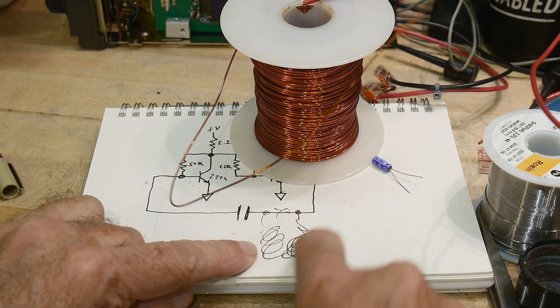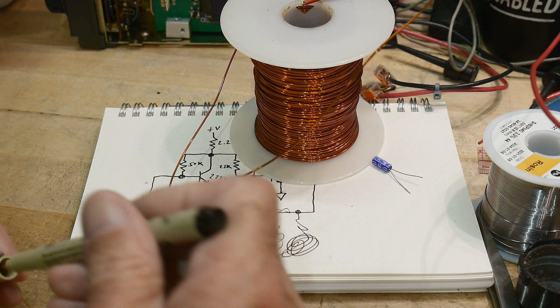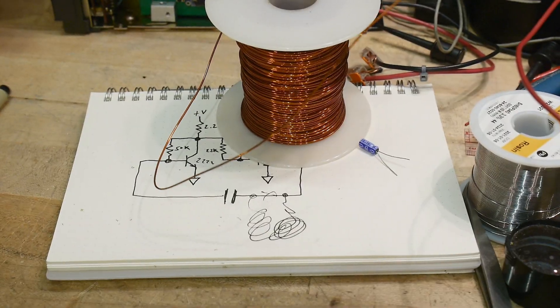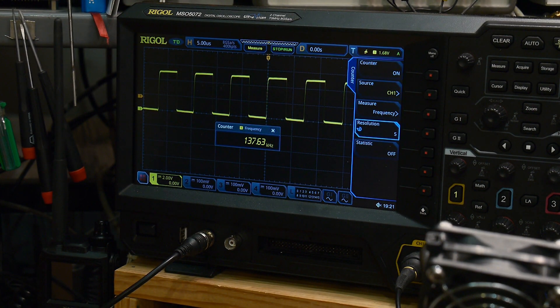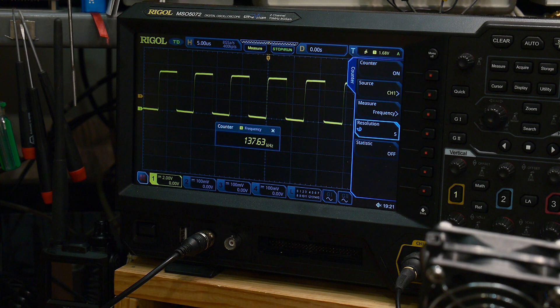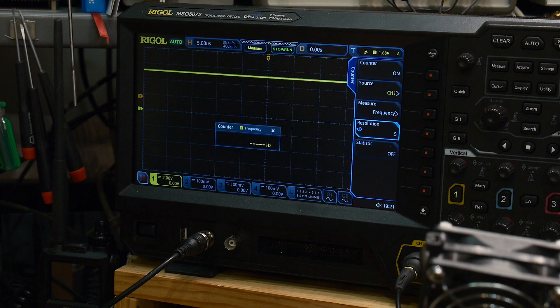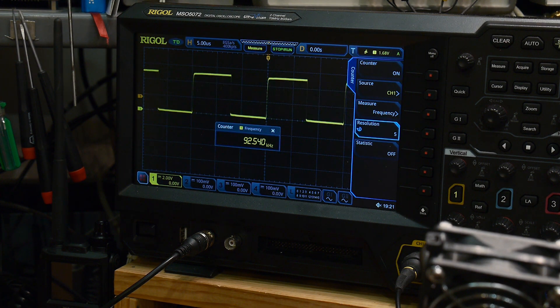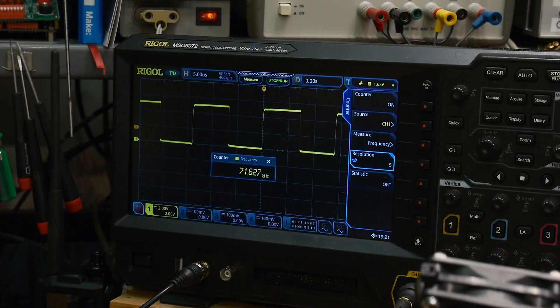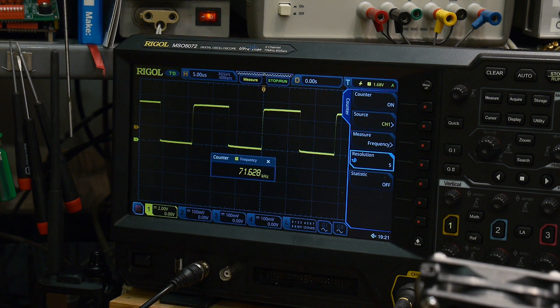We're going to put in this additional length of wire here. And so let's see what our oscillator does. We are here at 137.63. And I'm going to break the connection for the capacitor. And then I'm going to add that piece of wire. Here comes the wire. And there we go. And we've slowed it down. We slowed it down to 71.628 kilohertz. So there you go.